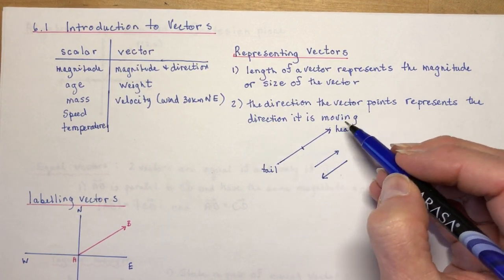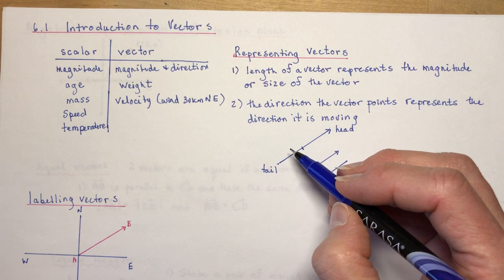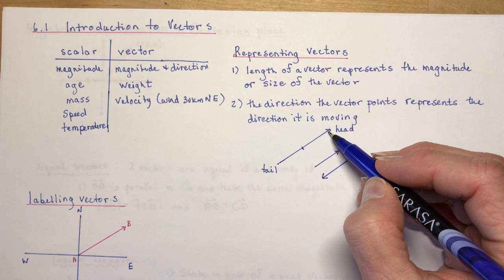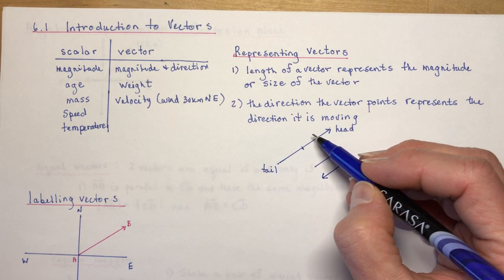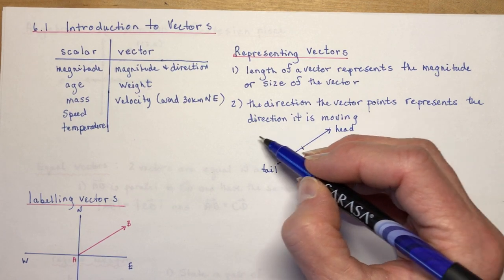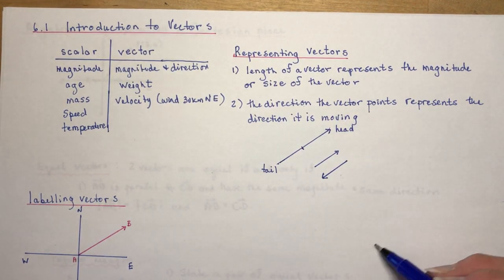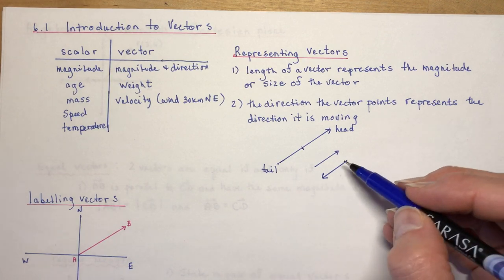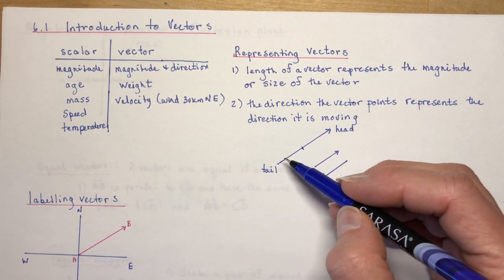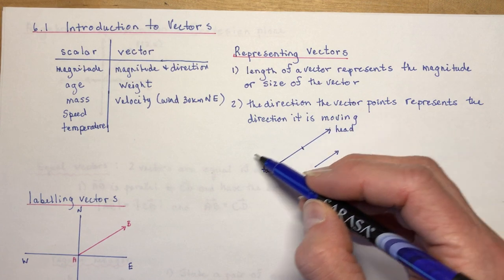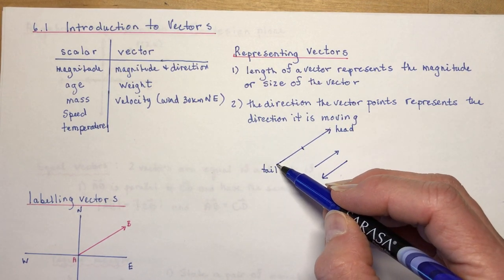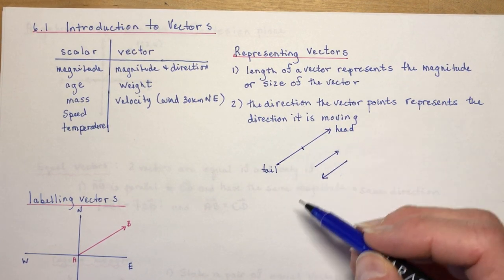So the direction the vector points represent the direction it's moving. So you can think of it like winds blowing. So I can have a whole bunch of vectors that have the same magnitude and direction. I can draw them all over the paper if I wanted to. It's like the wind blowing. It's not just in one spot. It could be anywhere, as long as it has the same magnitude and direction.